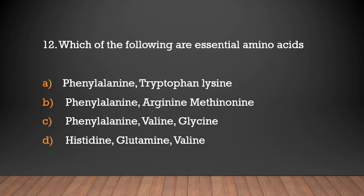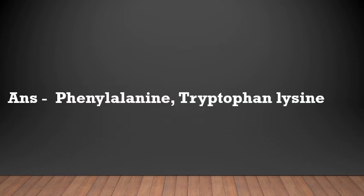Question: Which of the following are essential amino acids — phenylalanine, tryptophan, lysine; phenylalanine, arginine, methionine; phenylalanine, valine, glycine; or histidine, glutamine, valine? Answer: Phenylalanine, tryptophan, and lysine.